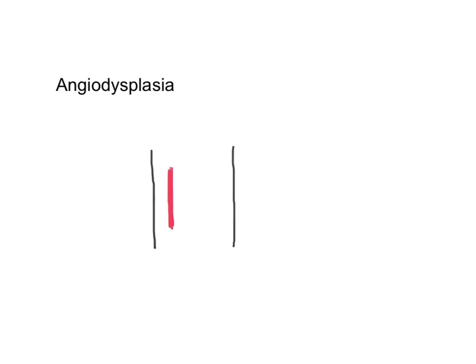The last cause is angiodysplasia. This is a degeneration of the blood vessels in the colon where the vessel walls become thin and ectatic, which can cause bleeding.